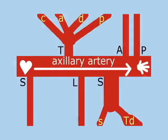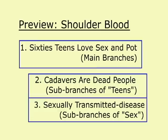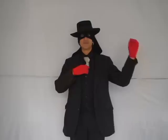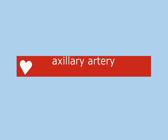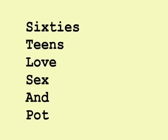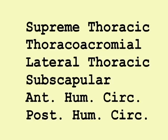If you can draw this diagram, you theoretically understand the arteries in the shoulder region. You can brute force it into your memory, or you can learn these three mnemonics. Let's first talk about the main branches directly off the axillary artery — the artery that comes from the heart to the hand. The axillary artery gives off six branches, remembered with the mnemonic: '60s teens love sex and pot.'